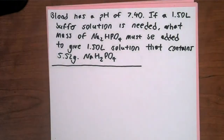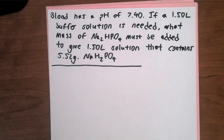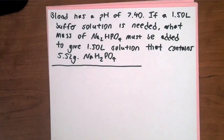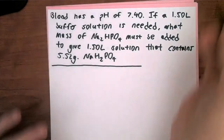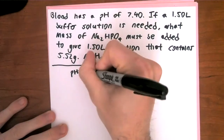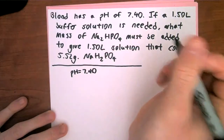The problem states: blood has a pH of 7.40. If a 1.5-liter buffer solution is needed, what mass of the sodium salt must be added to give the 1.5-liter solution that contains 5.52 grams of the acidic formula salt? There's a lot of information in this question. Reading the assumptions can be overwhelming because we have basically three different values given. Let's write down what we know: pH = 7.40.